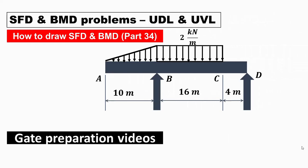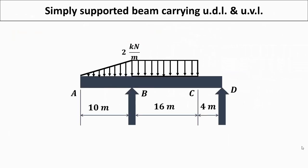In this video we will see how to draw shear force and bending moment diagram in case of uniformly distributed load and uniformly varying load. The arrangement of the beam is as shown in the figure. We have a uniformly distributed load of 2 kN per meter for 16 meter length and uniformly varying load from 0 to 2 kN per meter for 10 meter length. There is an effective overhang on the left hand side of 10 meter which carries the uniformly varying load.